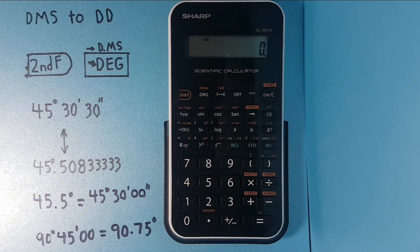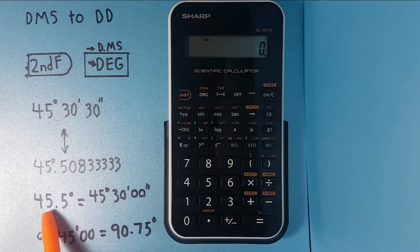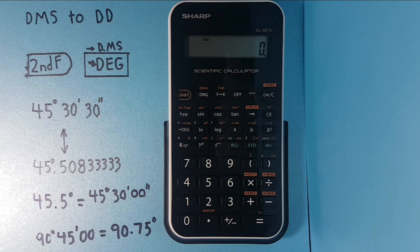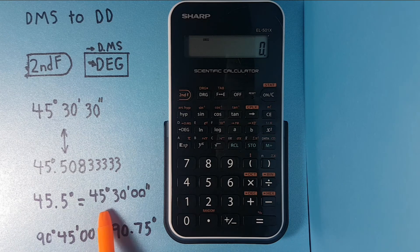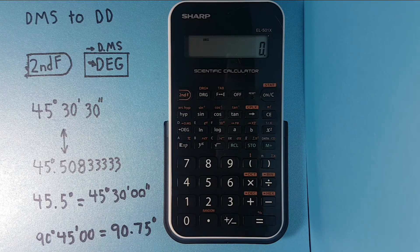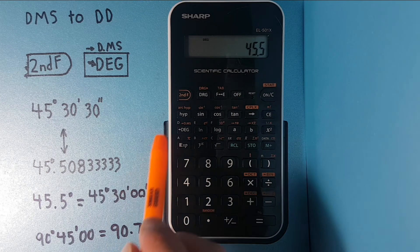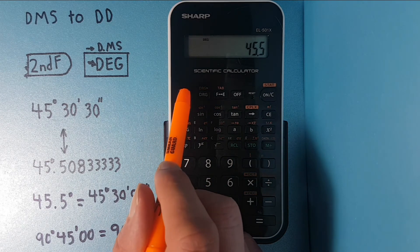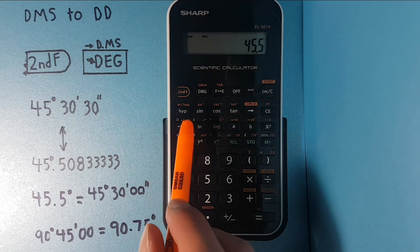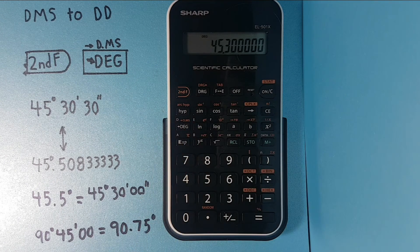All right, let's try a couple more examples. We know that 45.5 in decimal degrees should equal 45 degrees, 30 minutes. So if we enter 45.5 and press second function DMS, we get 45 degrees, 30 minutes, 0 seconds.